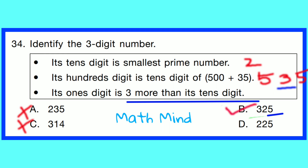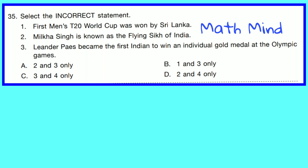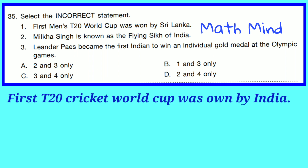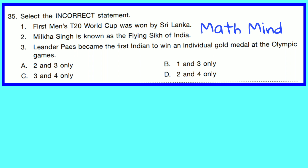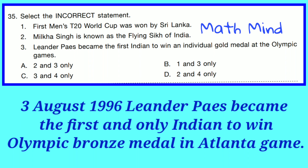Question No. 35. Select the incorrect statement. Statement 1: The first T20 World Cup was won by Sri Lanka — this is false; the first T20 Cricket World Cup was won by India in South Africa in 2007, defeating Pakistan. Statement 2: Milkha Singh is known as the Flying Sikh of India — this is correct. Statement 3: Leander Paes became the first Indian to win an individual gold medal at the Olympic Games — this is incorrect; on 3rd August 1996, Leander Paes won the first Olympic bronze medal for India at the Atlanta Games, not gold. So Option B is correct — Statements 1 and 3 are both incorrect.